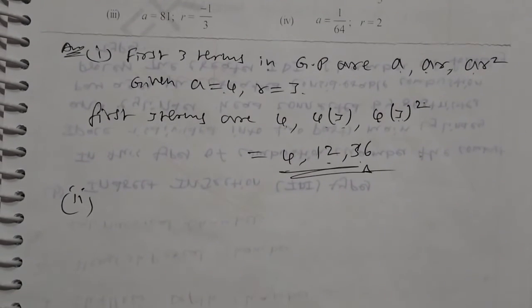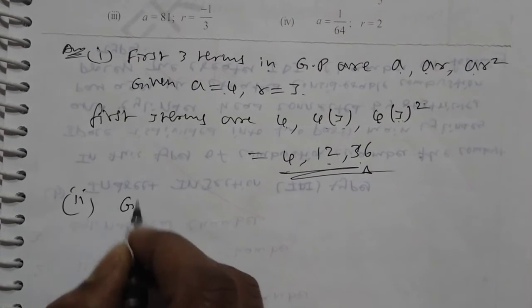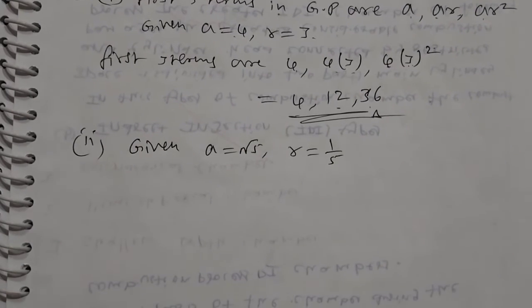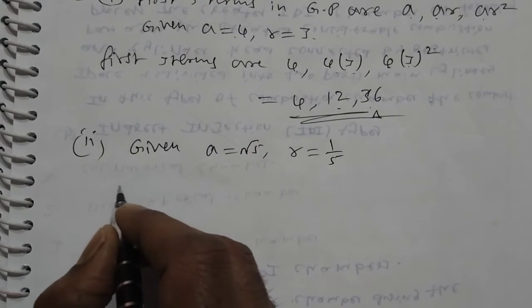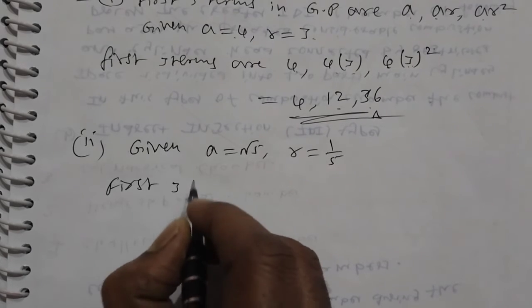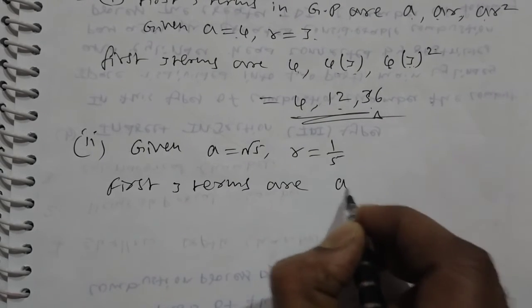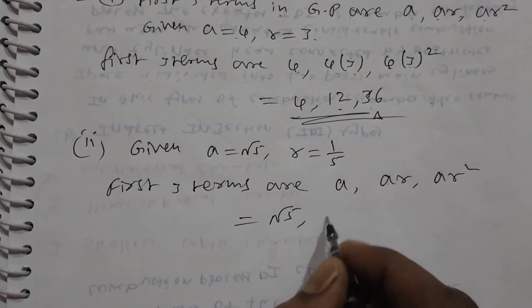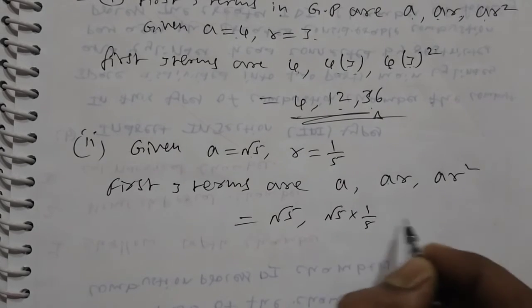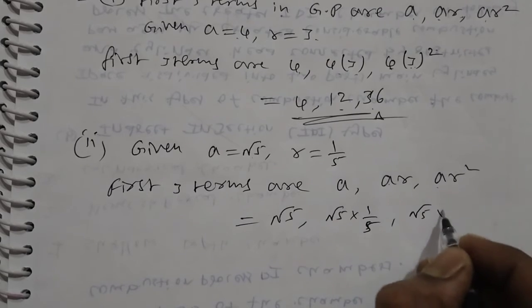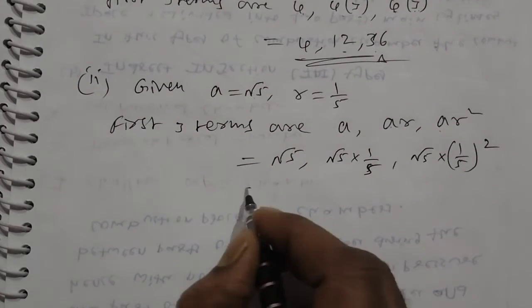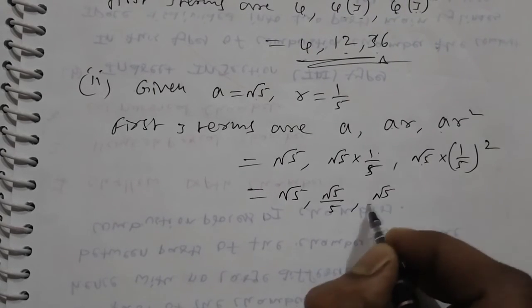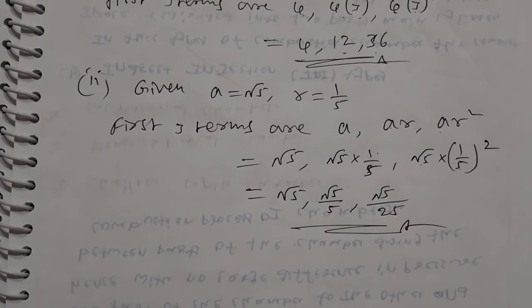Second bit: a = √5, r = 1/5. First three terms are a, ar, ar² = √5, √5 × (1/5), √5 × (1/5)² = √5, √5/5, √5/25.